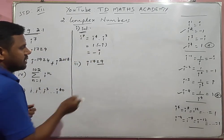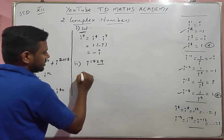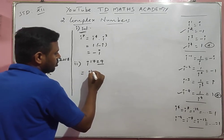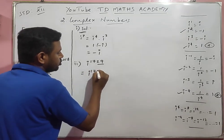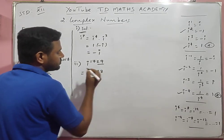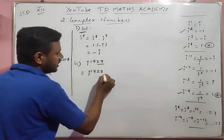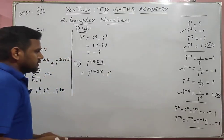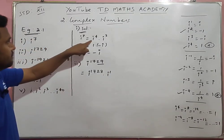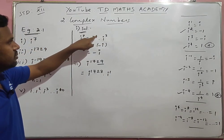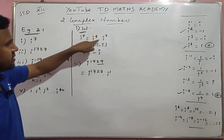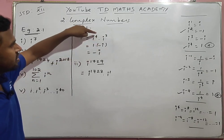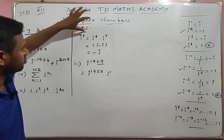I will change this to i power 1728 into i power 1. Using the rule that when the base is equal, we add the powers — so i power 1728 times i power 1.